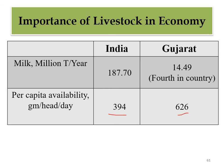If you compare with Gujarat, Gujarat has almost double the per capita milk availability - 626 grams per head per day, compared to India's national average of 394 grams.